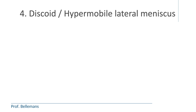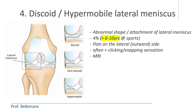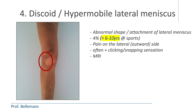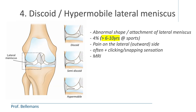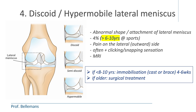In about 4% of children, the lateral meniscus — the outer shock absorber of the knee — develops somewhat abnormally, leading to either a more rectangular discoid shape, a semi-discoid shape, or an absent attachment to the capsule, called a hypermobile lateral meniscus. The typical symptom is pain on the lateral or outward side of the knee, usually starting around age 6 to 10, often with a clicking or snapping sensation. An MRI is needed to confirm the diagnosis. In young children below 8 to 10 years, temporary immobilization in a cast or brace for 4–6 weeks followed by a strengthening program may be sufficient. In older children, surgical treatment is indicated to restore the meniscus shape and its capsular attachment.